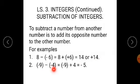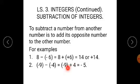Second example: minus 9 minus minus 4. Here, you have to add the opposite of minus 4, which is plus 4. The signs of both numbers are different. Therefore, ignore the sign, subtract the smaller number from the bigger one — 9 minus 4 gives you 5 — and put the sign of the bigger number. Therefore, the answer is minus 5.